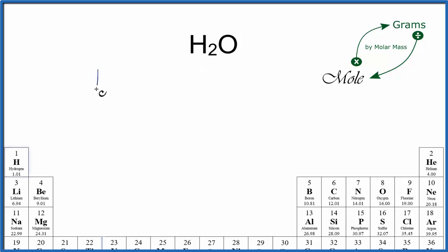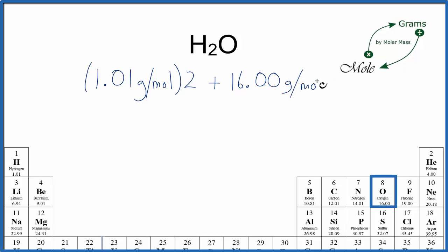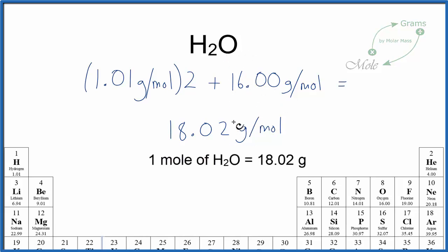So hydrogen is 1.01 grams per mole. We do have these two hydrogens, though. So let's multiply that by two. Plus oxygen, that's 16.00 grams per mole. We add them up, and we get 18.02 grams per mole. That's the molar mass for H2O, and it just says that one mole weighs 18 grams.